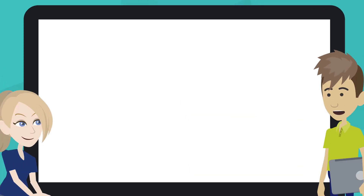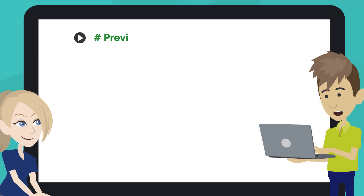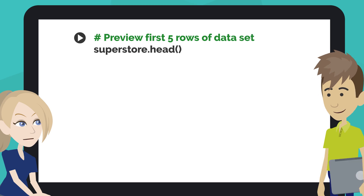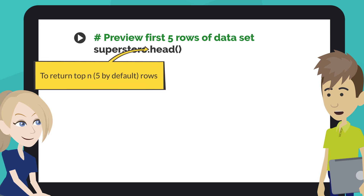Let's have a look at a preview of the first five rows of the dataset. Type the code like this into the next code cell of your notebook. This code shows the first five rows of the dataset. Pandas' head method returns the top n rows — five, by default — of the dataset.